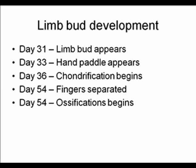When we look at the development of the limbs, during the fourth week around day 31, a limb bud appears. A couple days later, the hand appears like a paddle. By day 36 of gestation, chondrification begins. At day 54, fingers are separated, the limb is present, and ossification begins. At that point, we need to consider bone formation and the growth of the long bones.